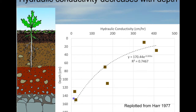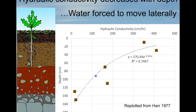In some places we might have bedrock not far below the land surface. But even where we have fairly uniform soils, this decline in hydraulic conductivity means that water moving vertically into the subsurface finds it harder and harder to keep moving vertically, and instead is forced to move laterally or downslope.